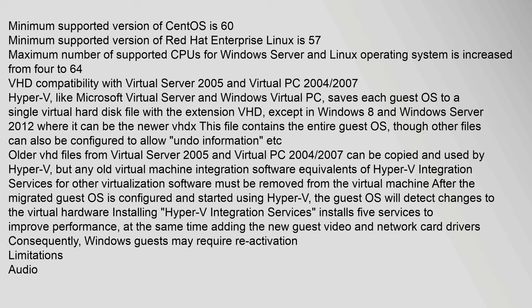Hyper-V, like Microsoft Virtual Server and Windows Virtual PC, saves each guest OS to a single virtual hard disk file with the extension VHD, except in Windows 8 and Windows Server 2012 where it can be the newer VHDX format. This file contains the entire guest OS, though other files can also be configured to allow undo information. Older VHD files from Virtual Server 2005 and Virtual PC 2004–2007 can be copied and used by Hyper-V, but any old virtual machine integration software must be removed. After the migrated guest OS is configured and started using Hyper-V, the guest OS will detect changes to the virtual hardware. Installing Hyper-V Integration Services installs five services to improve performance, adding new guest video and network card drivers. Consequently, Windows guests may require reactivation.